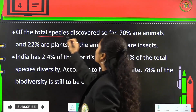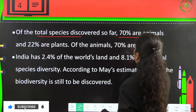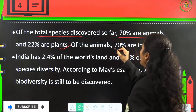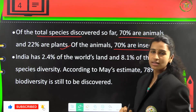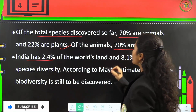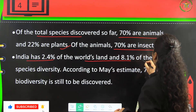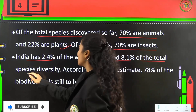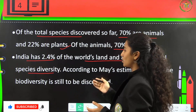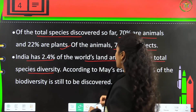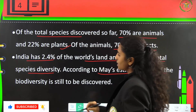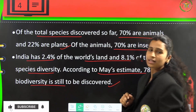Of the total species discovered so far, 70 percent are animals and only 22 percent comprises of plants. Of the animals, 70 percent are insects. In India, it covers 2.4 percent of the world's land and accounts for 8.1 percent of the total species diversity. According to May's estimation, 78 percent of the biodiversity is still yet to be discovered.